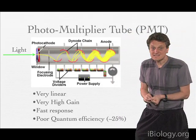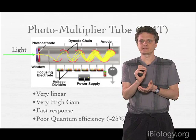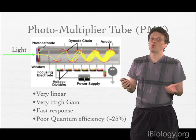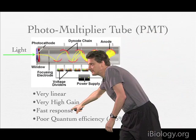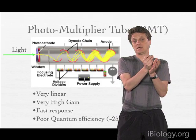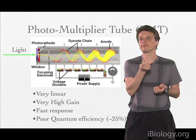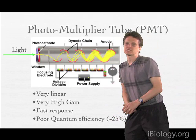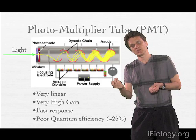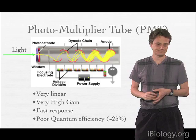PMTs are very fast, they are highly linear, and they have a very high gain so they can literally measure single electron hits. They are almost ideal measurement devices, with the main pitfall being a poor quantum efficiency. Quantum efficiency means the efficiency with which a single photon is converted into an electron. A quantum efficiency of 25% means you need on average four photons to hit the photocathode to get one electron in, and that electron you can then measure very well.